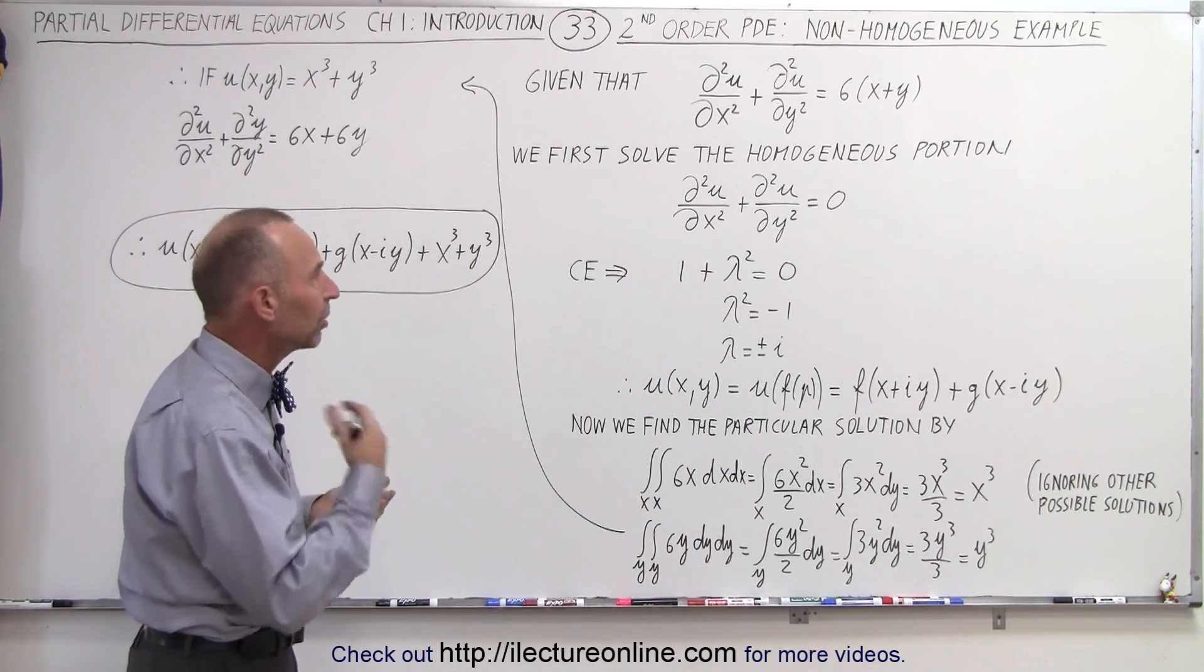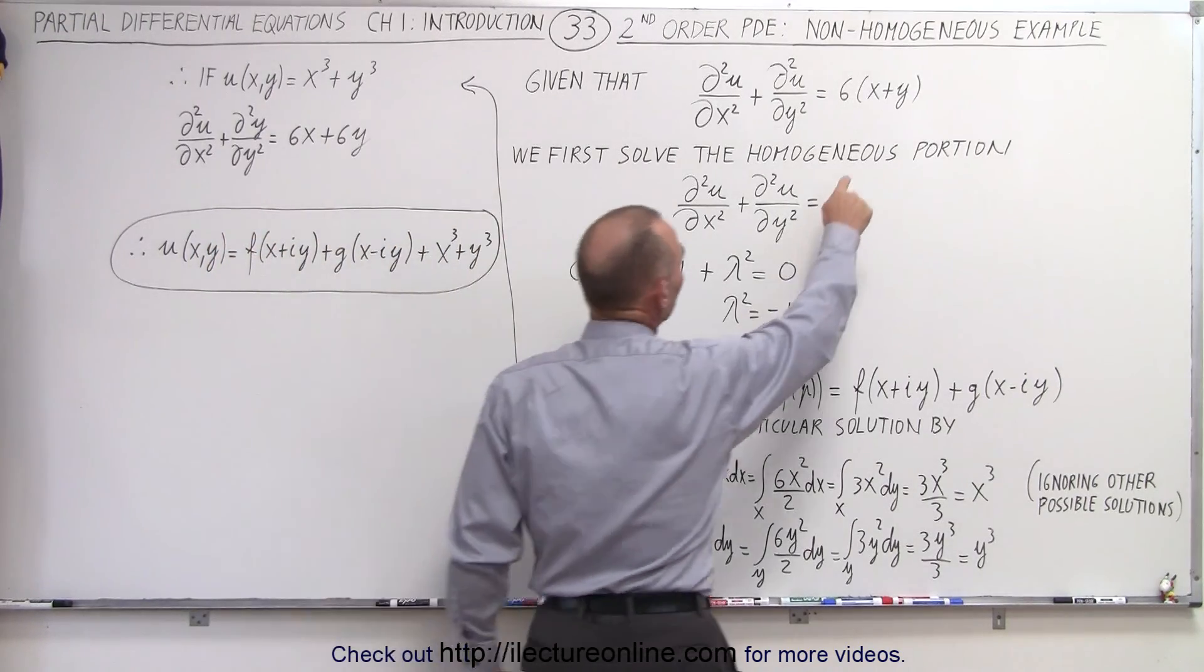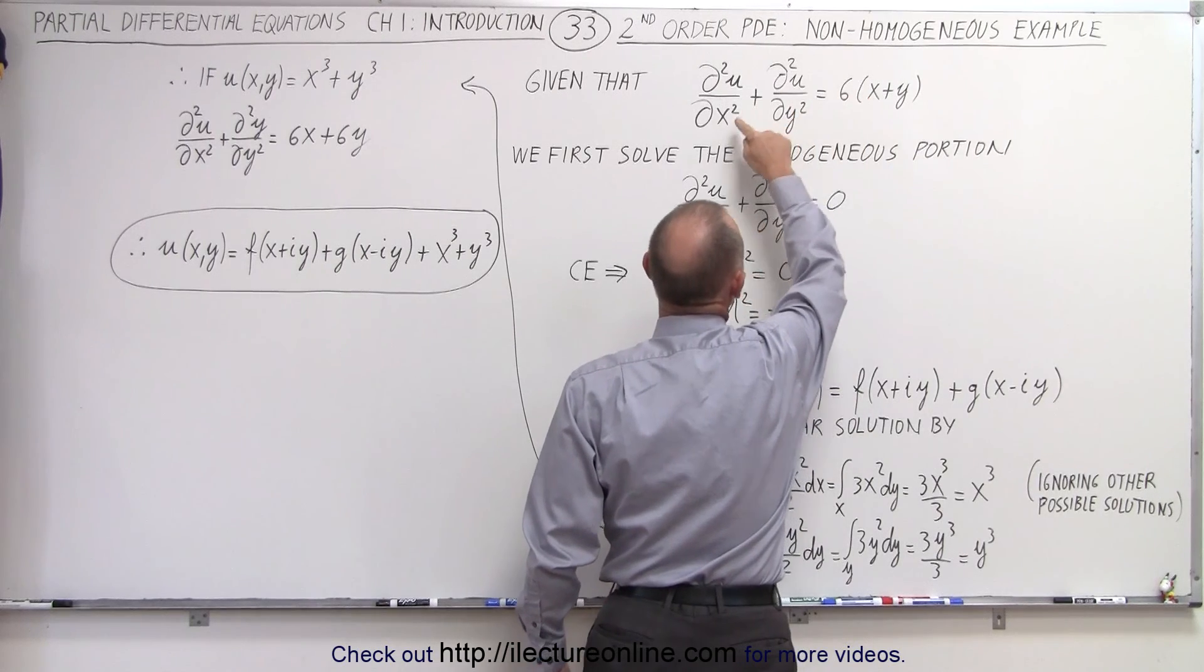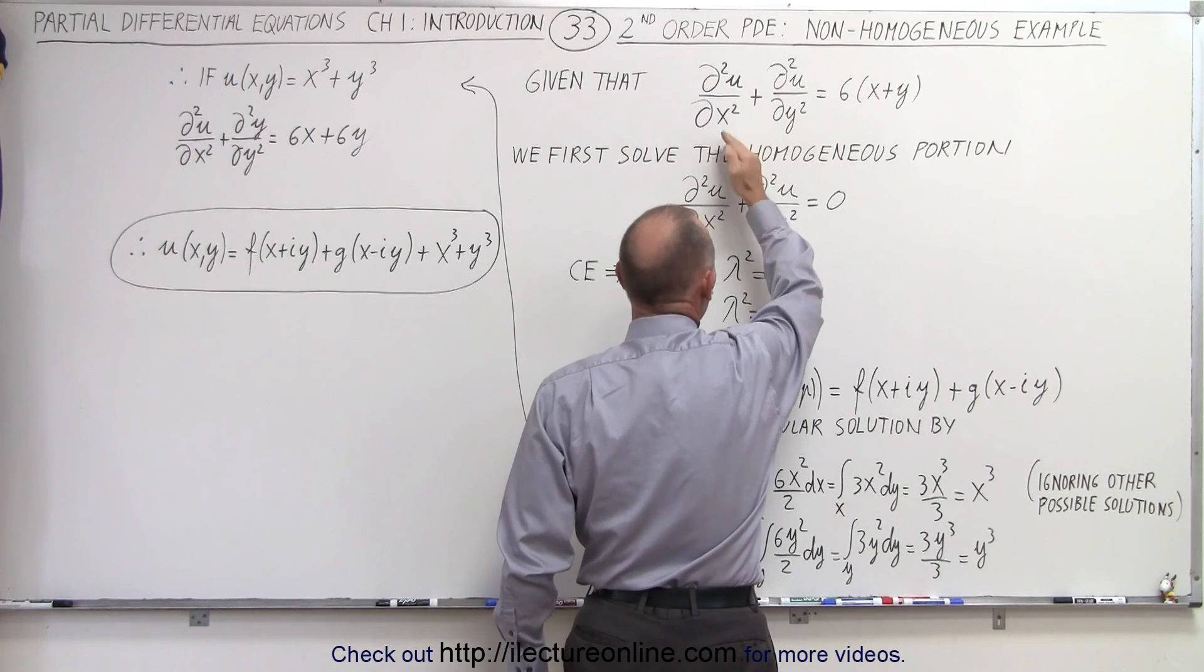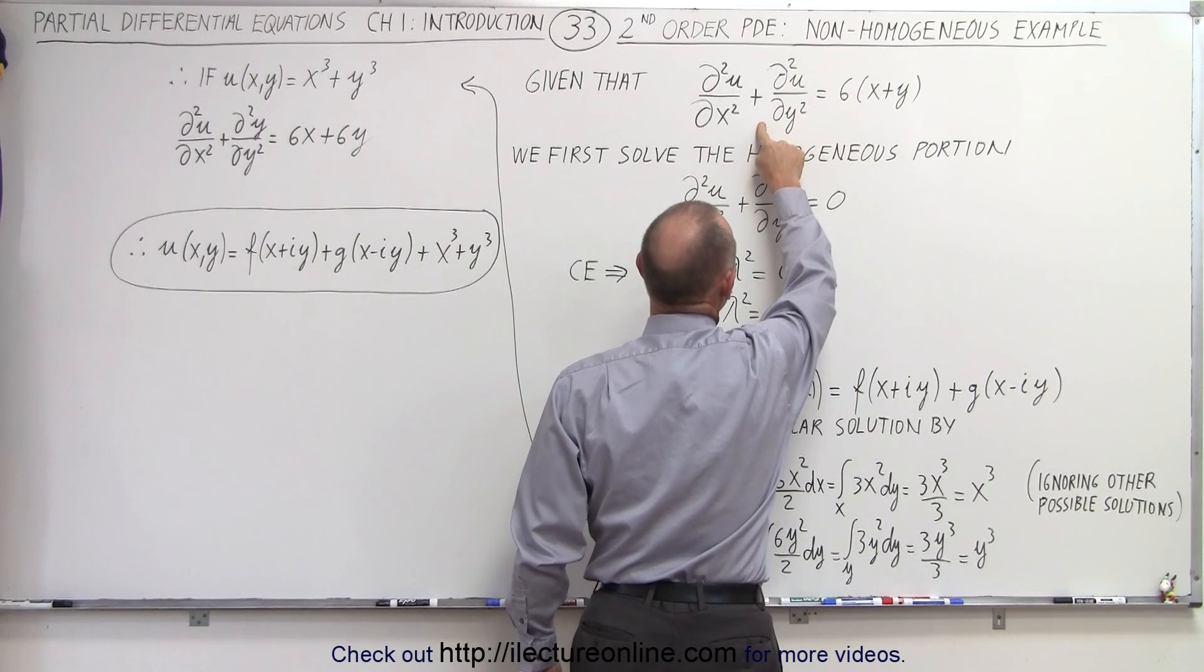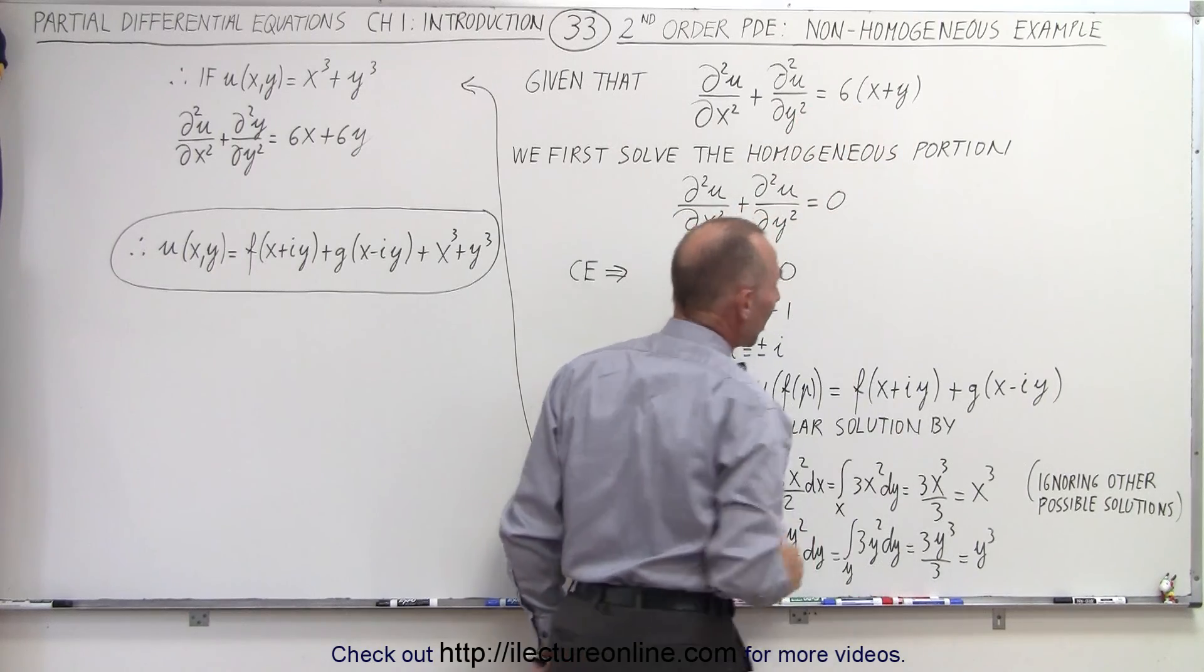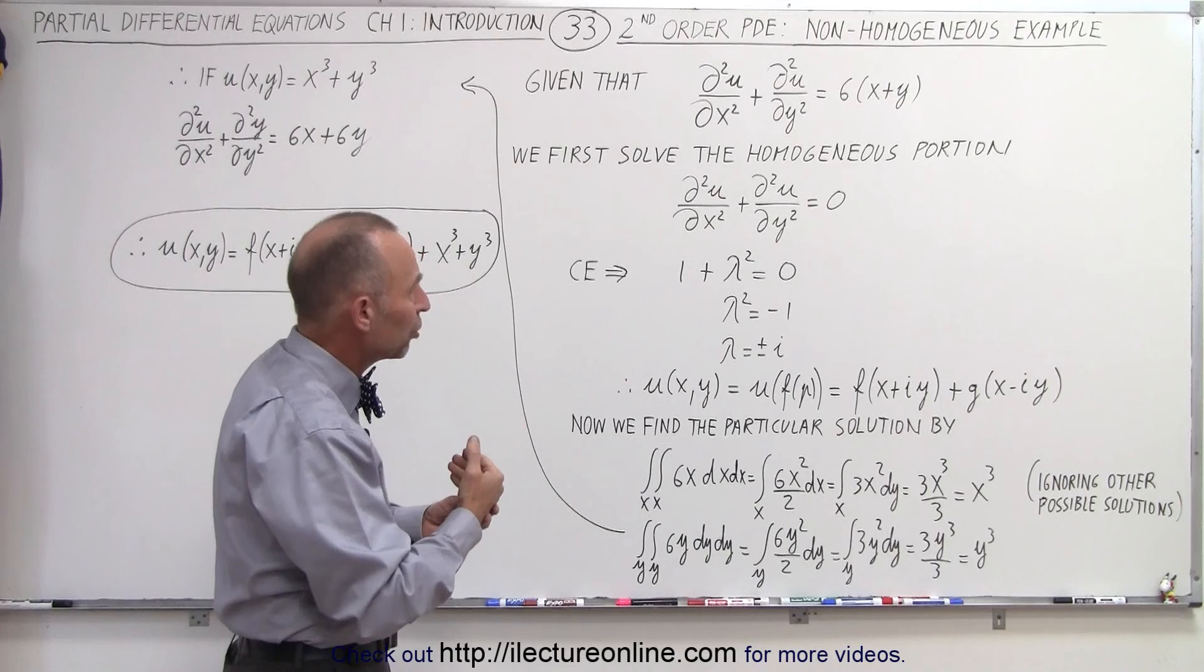But now we need to find the particular solution. Now it turns out when we take a look at this, we have a 6x plus a 6y there. If we take the second partial derivative with respect to x, then we get 6x. And we take the second partial derivative of the function with respect to y, we get 6y. That suggests we probably started with an x cubed and a y cubed.